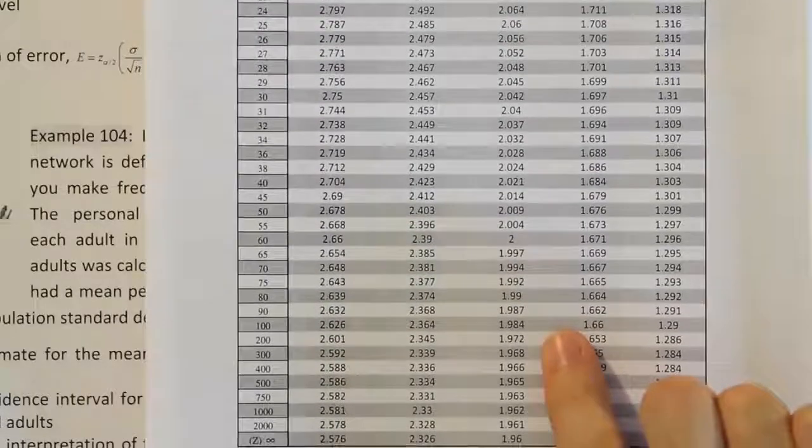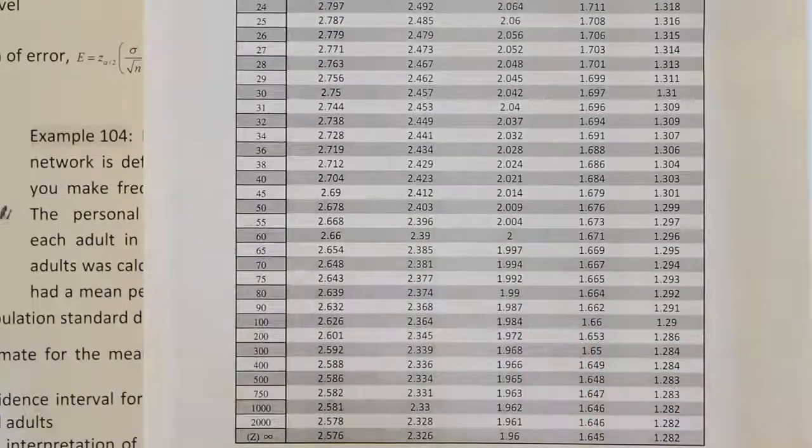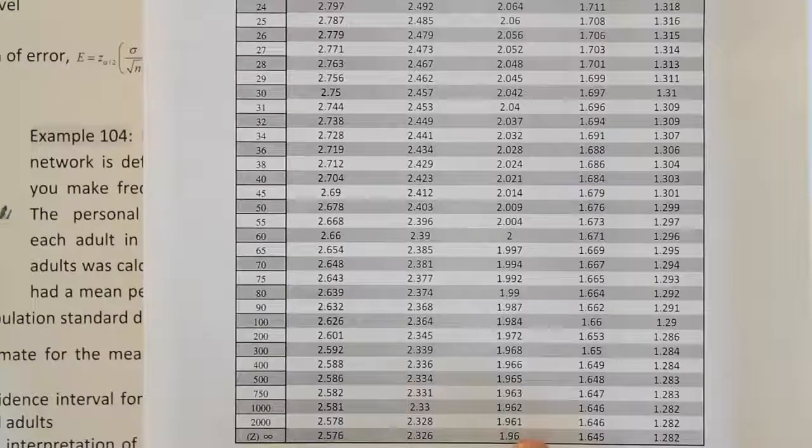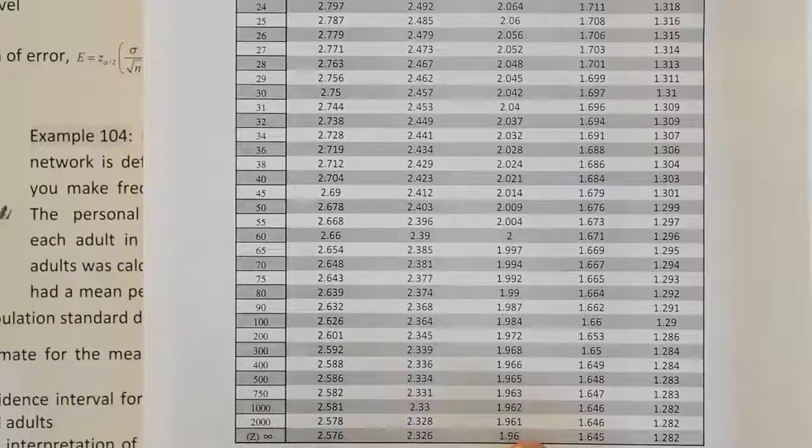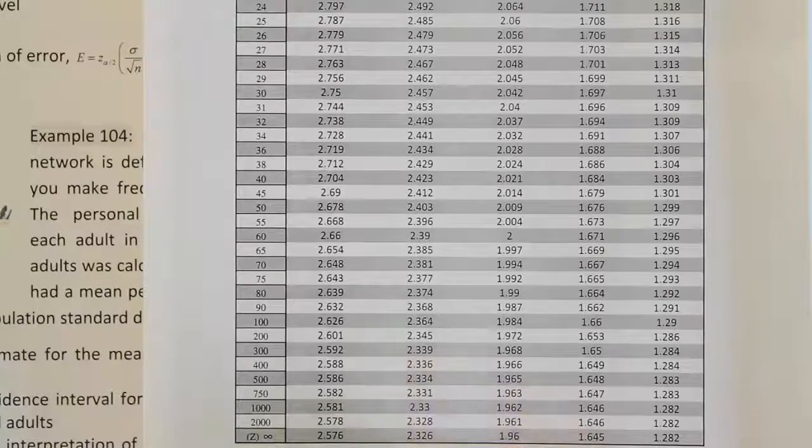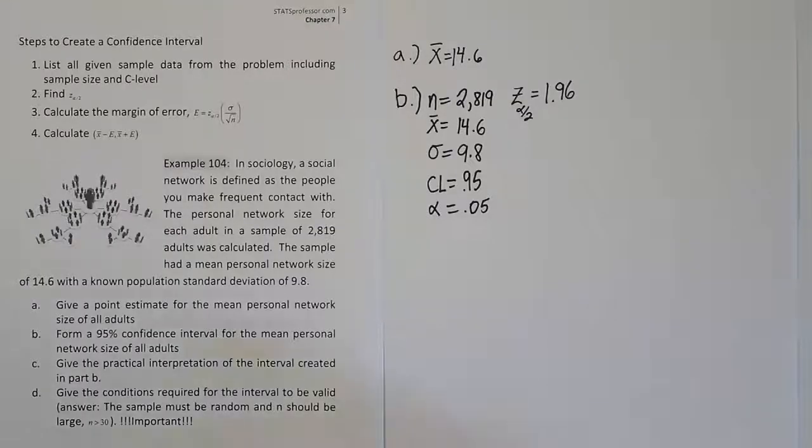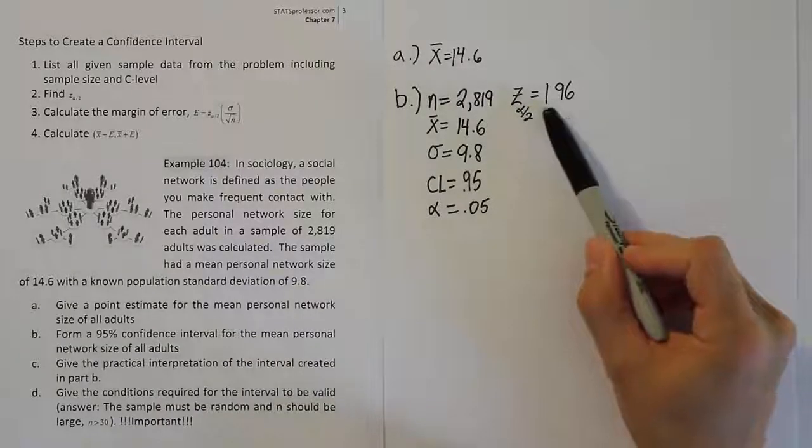At the very bottom of the table, the last value in that column is 1.96. So that's the value we will take for our Z α/2: 1.96.